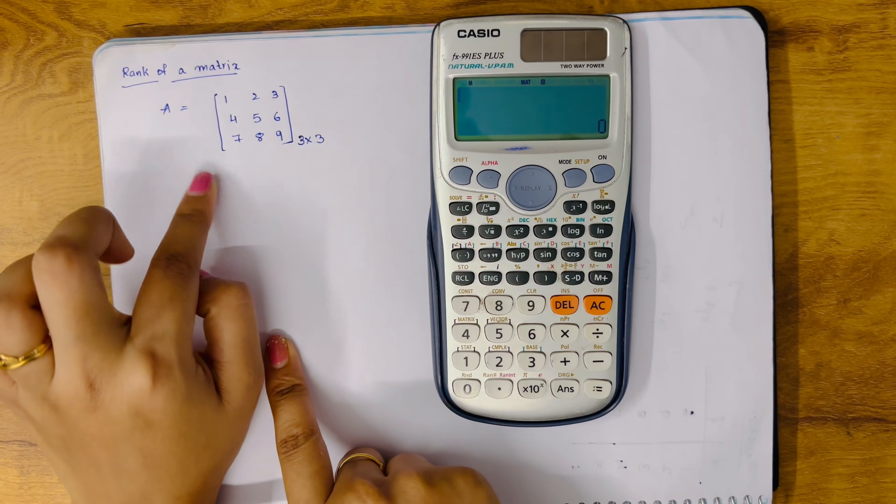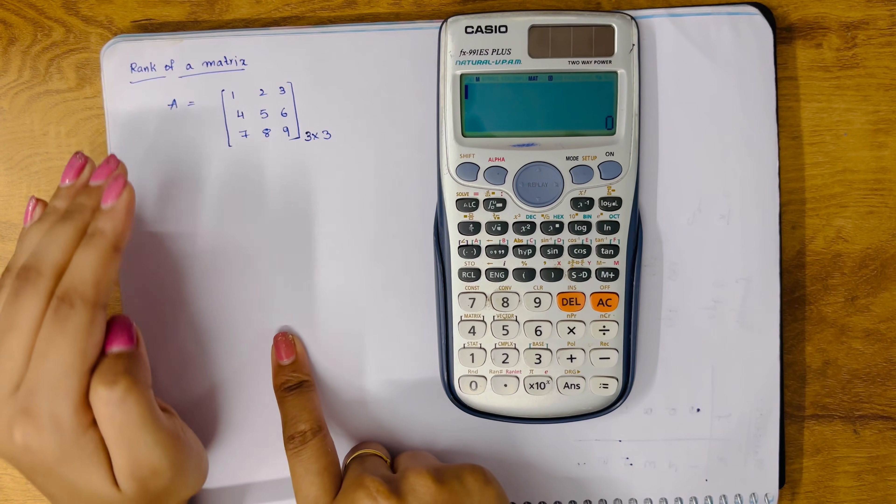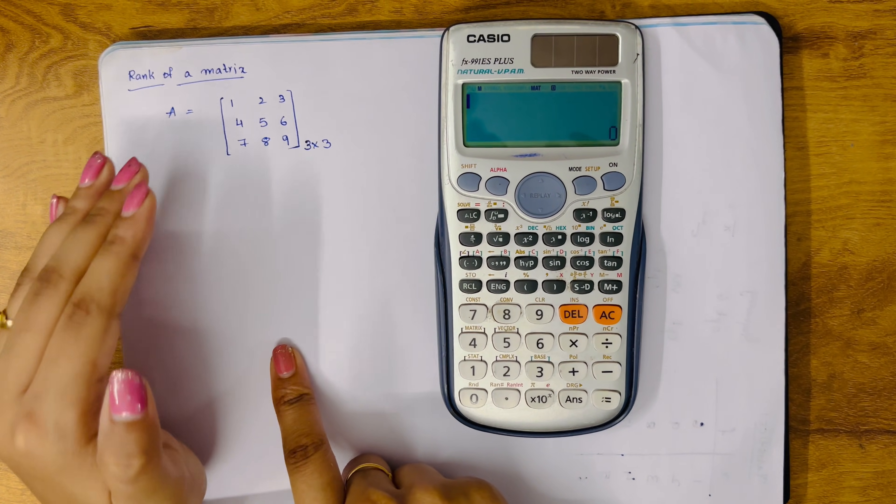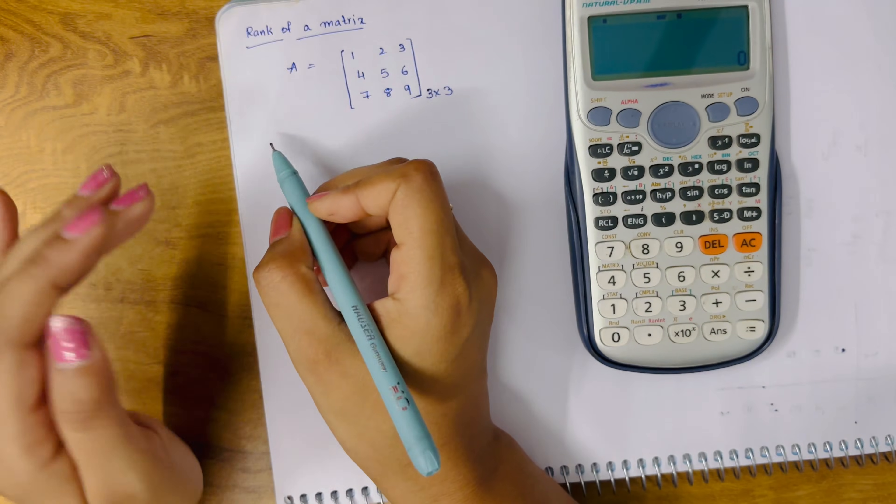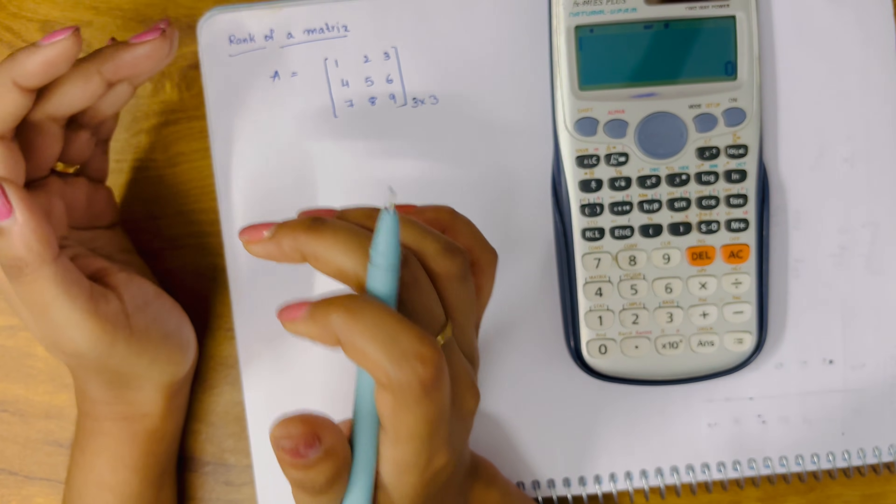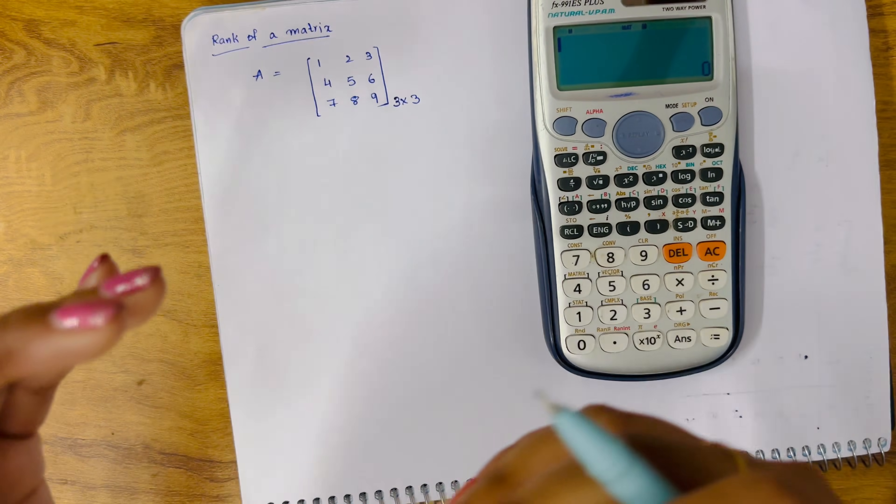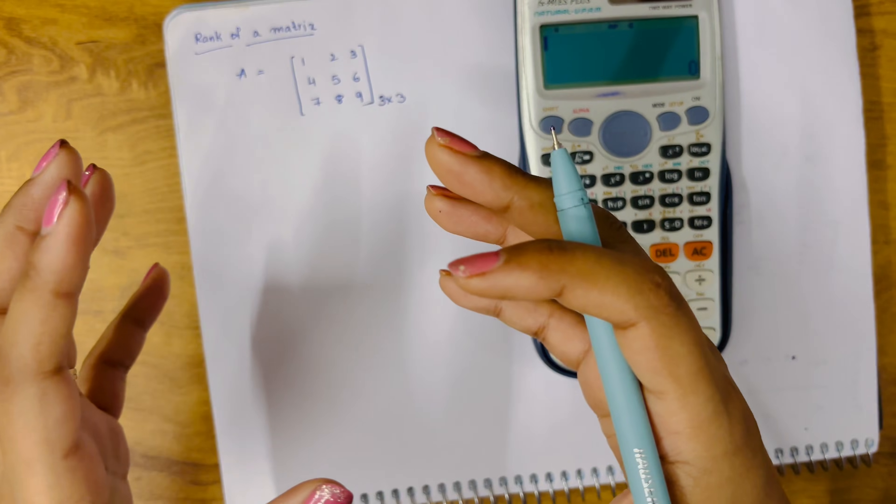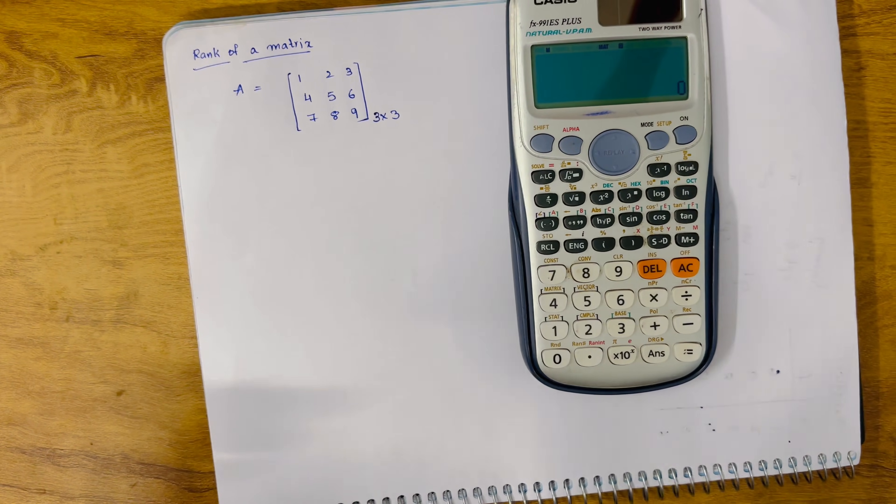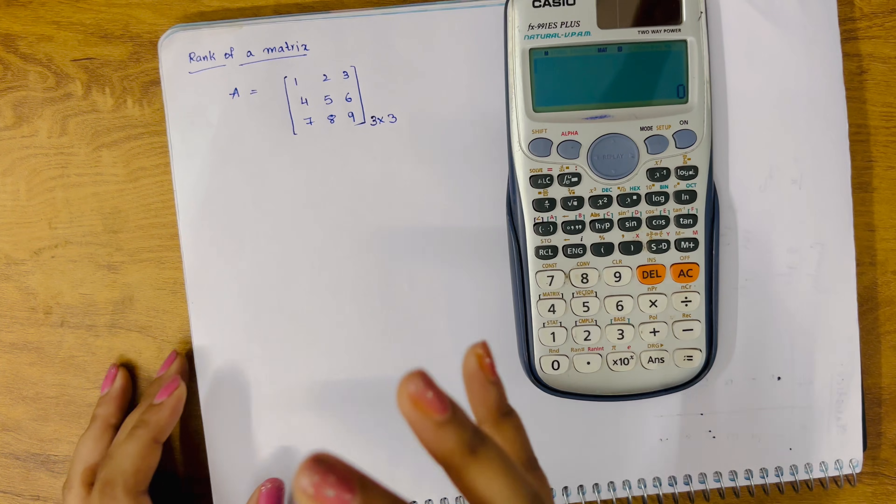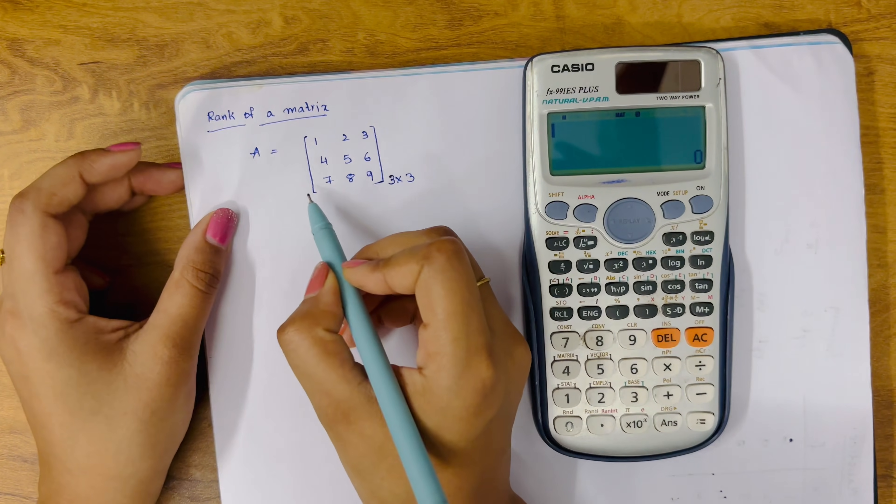We have a matrix. To find the rank of a matrix, rank basically depends on the order of the matrix. If a determinant of a particular matrix is non-zero, then whatever that order is, that will become the rank of the matrix. Got the point? Now first we'll find the determinant of this matrix.